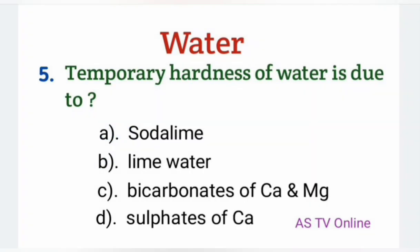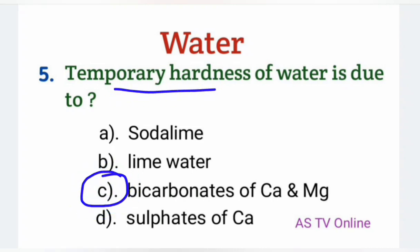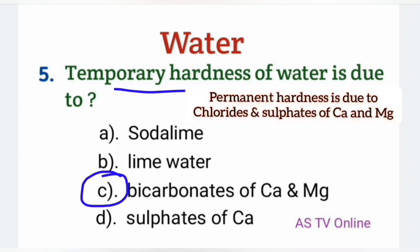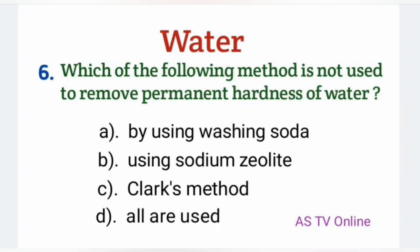No. 5: Temporary hardness of water is due to — soda lime, lime water, bicarbonates of calcium and magnesium, sulfates of calcium. Temporary hardness calcium اور magnesium کے bicarbonates کی وجہ سے ہوتی ہے اور permanent hardness calcium اور magnesium کے chlorides اور sulfates کی وجہ سے ہوتی ہے.